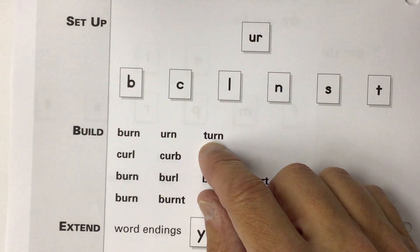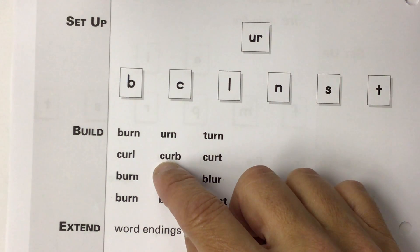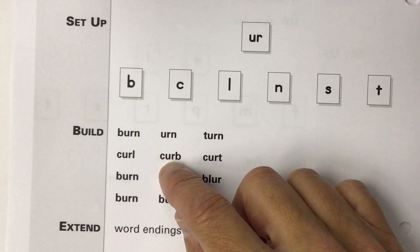This is the word turn. Notice that the U-R just says ur. Now you say it. This is the word curb. Notice that the U-R just says ur. Now you say it.